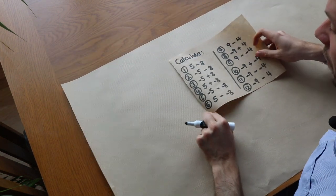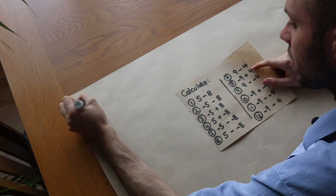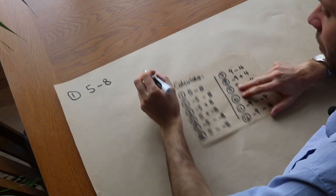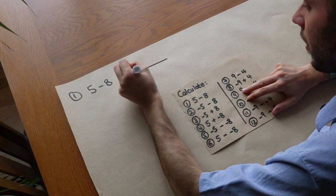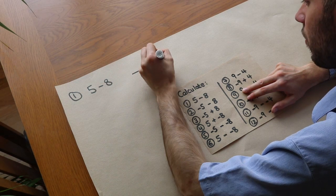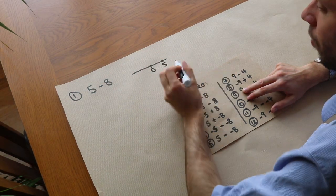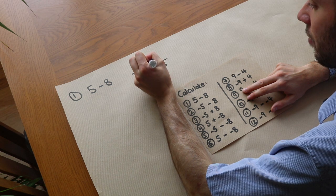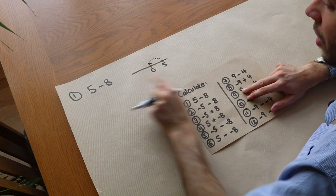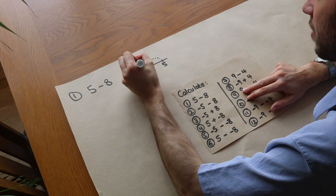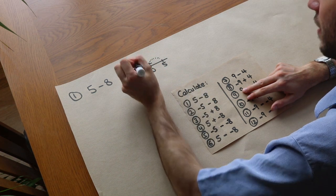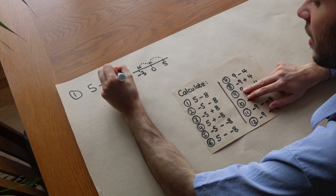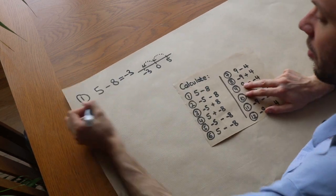Let's finish with some examples. Five subtract eight: on the number line, subtracting five initially gets you from five down to zero, but we've still got three left to subtract, so that gets us down to minus three. The answer is negative three.